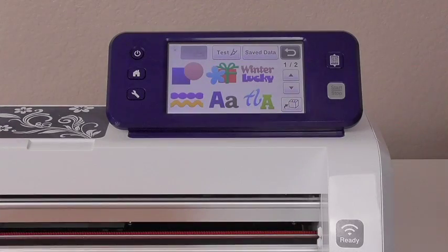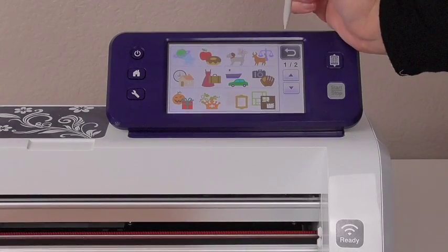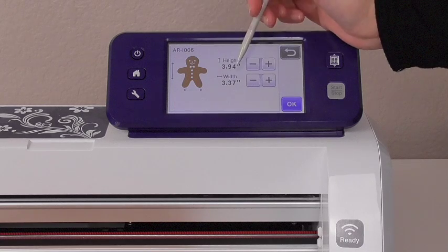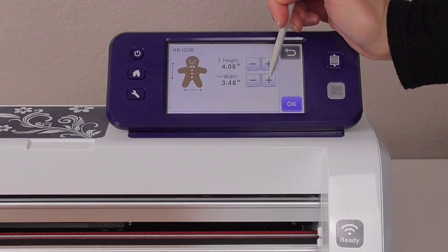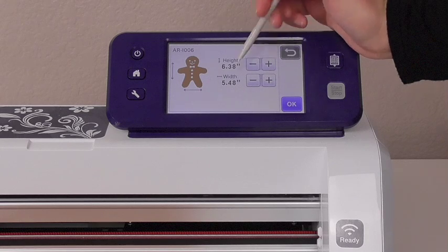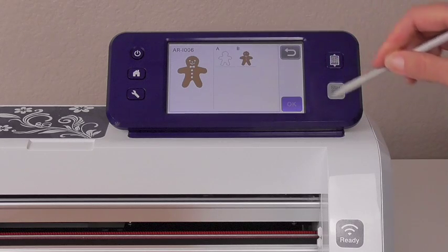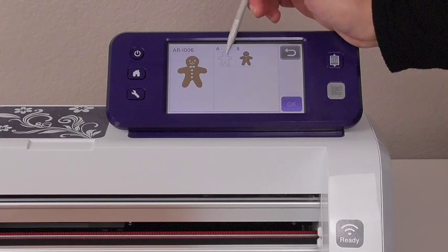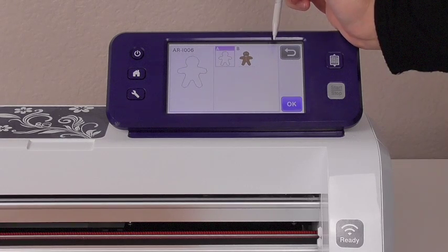For the gingerbread men we're going to use the built-in patterns so click on those and it'll be under that holiday one and you can see there's a little gingerbread man. So adjust the size as you need it and then hit OK. And then we want to choose that A pattern. It's just the outline of him not all of his features and buttons and everything. And then we'll click OK.